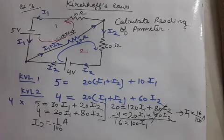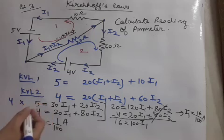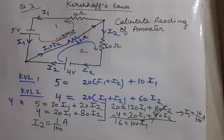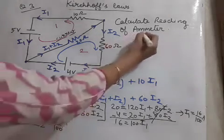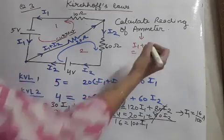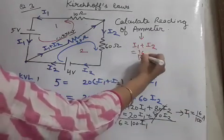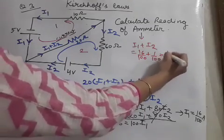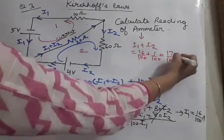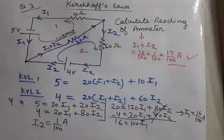And finally, the total current flowing in this middle branch will become I₁ plus I₂. So our answer will become the reading of ammeter is 16 by 100 plus 1 by 100, that means 17 by 100 ampere. So this is the answer.